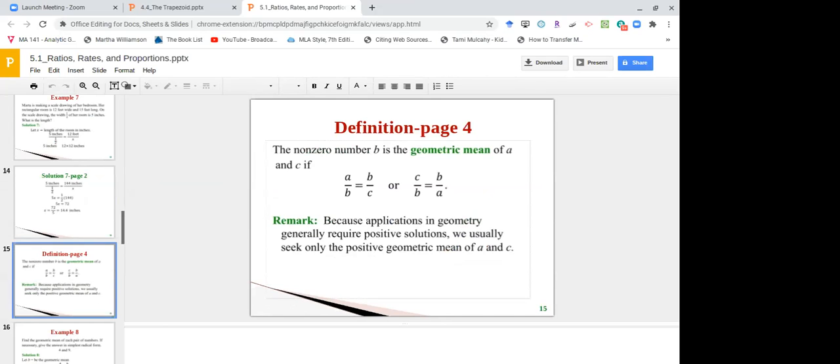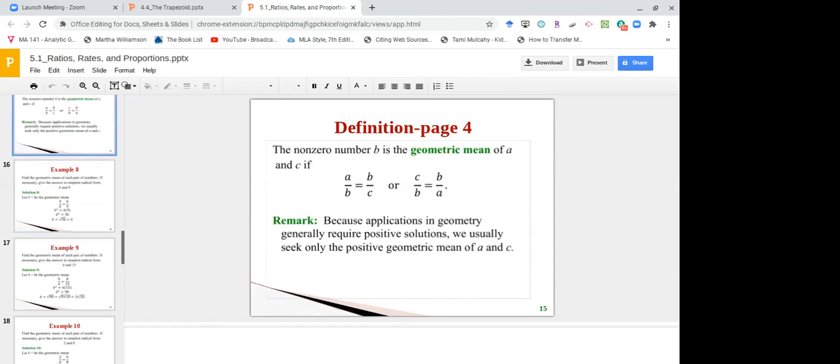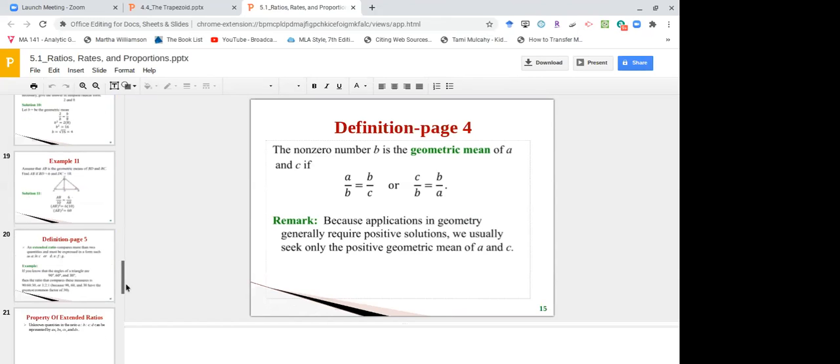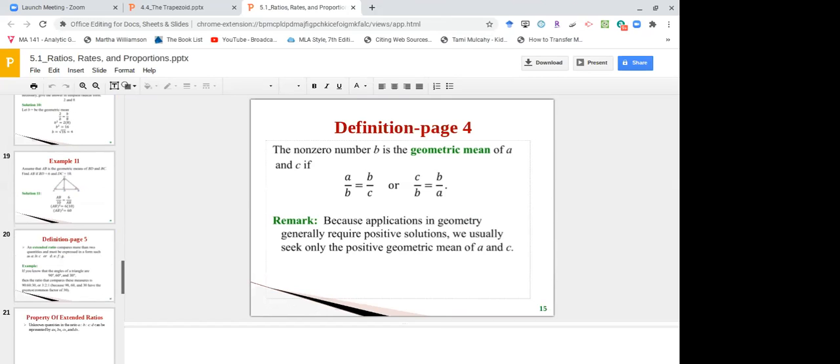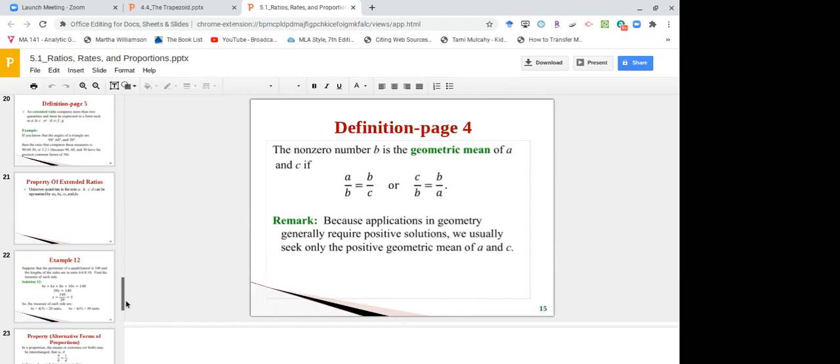And then we have something called the geometric mean. Geometric mean has some interesting applications for some of the problems that you're going to be doing later in the section, but it relates to proportions. So be sure that you study that. There are examples of that on the slides. Please make sure that you're looking at the slides. There are several examples here for you. And then we have something called extended ratios, where sometimes we have two or three ratios on top of each other. So that's 5.1. Now it's all fine and good to have all these techniques, but it's also good to be able to apply them.